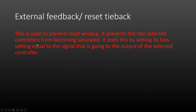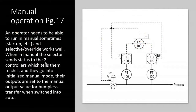It prevents the non-selected controller's output from becoming saturated by setting its bias equal to the signal going to the output of the selected controller. So even though it's not technically doing any work, it is responding to the same signals as the device that is doing the work. Let's address certain circumstances when you'll have discrepancies — one of those is when you're in manual operation, sometimes during startup.